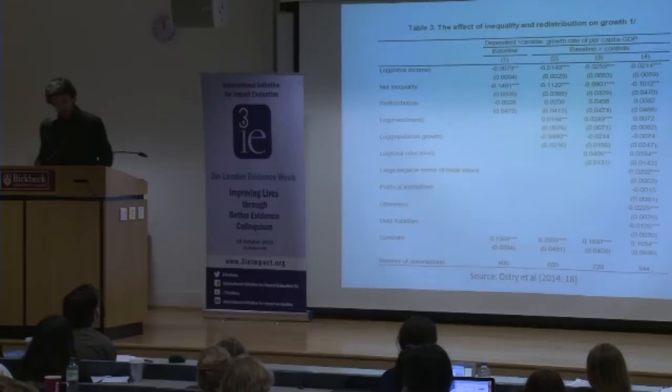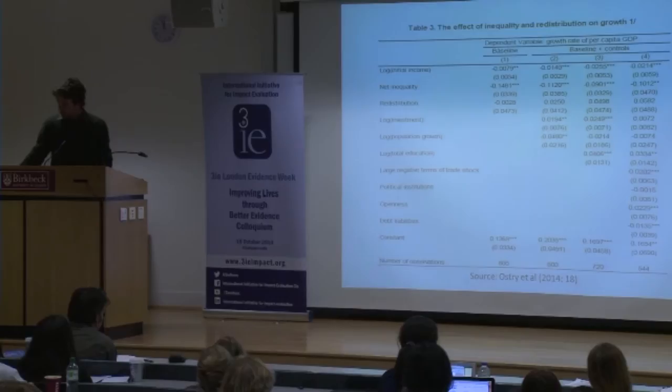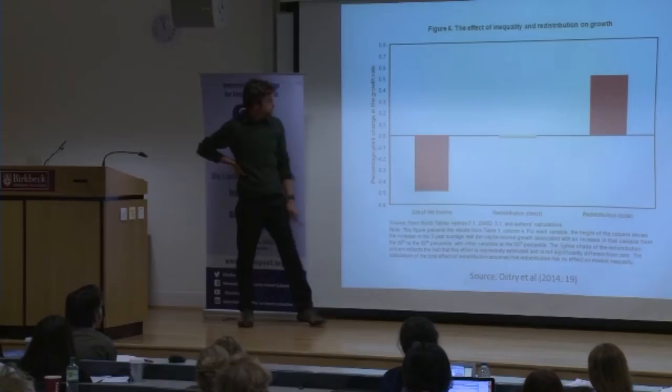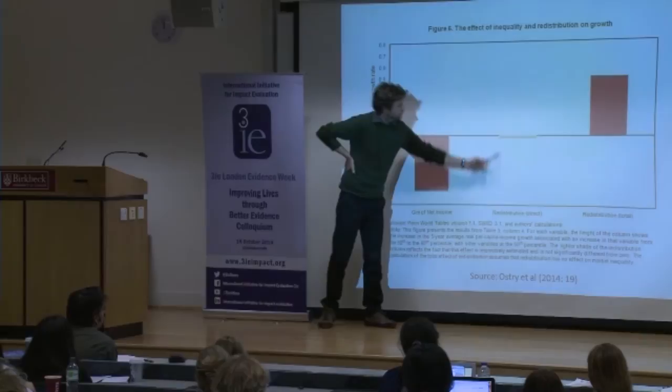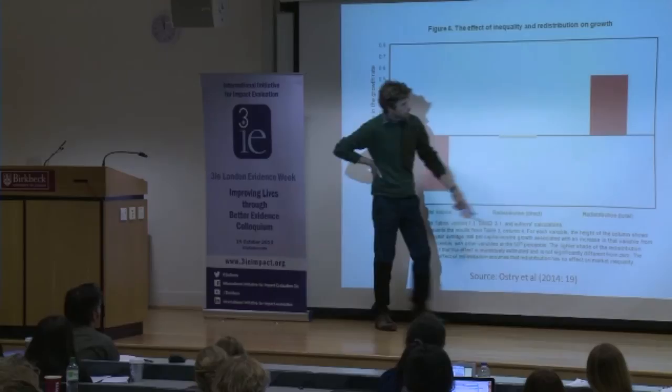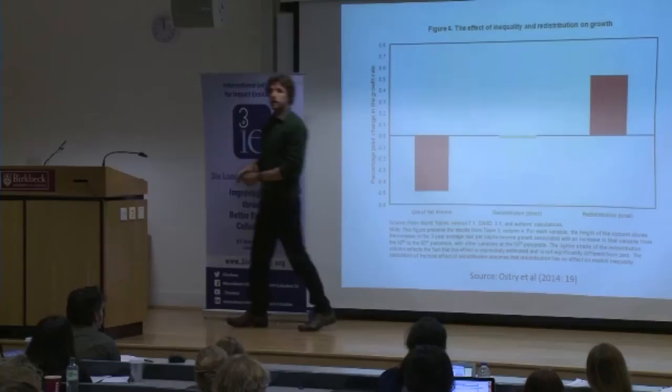Let me move on. This graph shows those same results: here is the effect of inequality, and here is the effect of redistribution — a very small direct effect of redistribution. This is the effect of inequality on growth. So if you add those two things together, the overall effect of redistribution on growth is actually positive, by reducing inequality. This is an interesting new contribution to the evidence, suggesting that inequality is bad for growth and redistribution won't necessarily make things any worse.